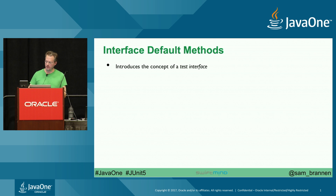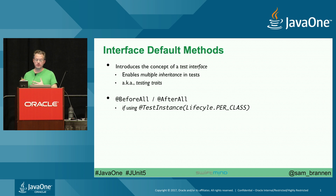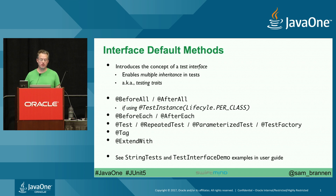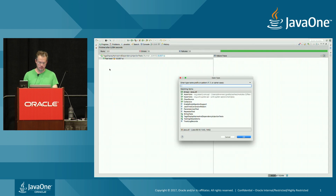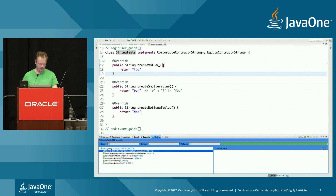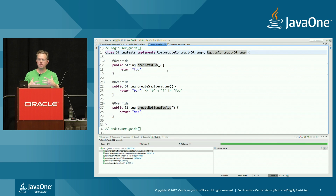Default methods: Java 8 introduces the concept of test interfaces in JUnit Jupiter, enabling multiple inheritance in tests — also known as testing traits. You can use annotations like @BeforeAll and @AfterAll on default methods, but only if using @TestInstance lifecycle per class; otherwise those methods must be static. @BeforeEach, @AfterEach, @Test, @Tag, @ExtendWith — all this can be included in test interfaces. For example, a test class with no test methods of its own can inherit tests from interfaces like ComparableContract and EqualsContract — reusable contracts or testing traits.